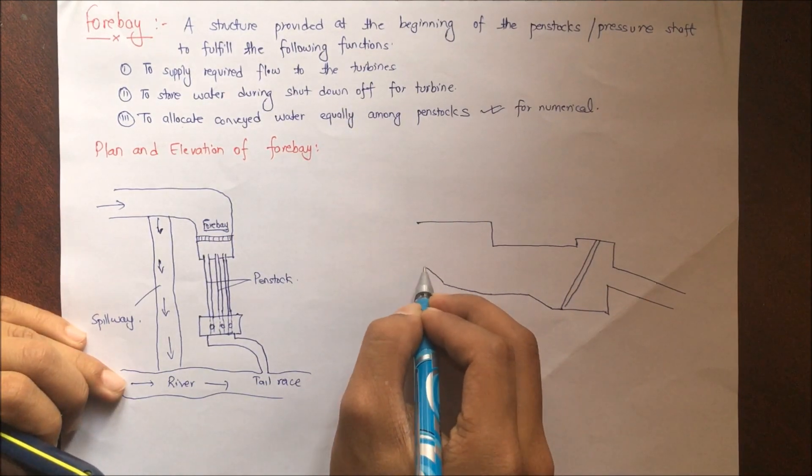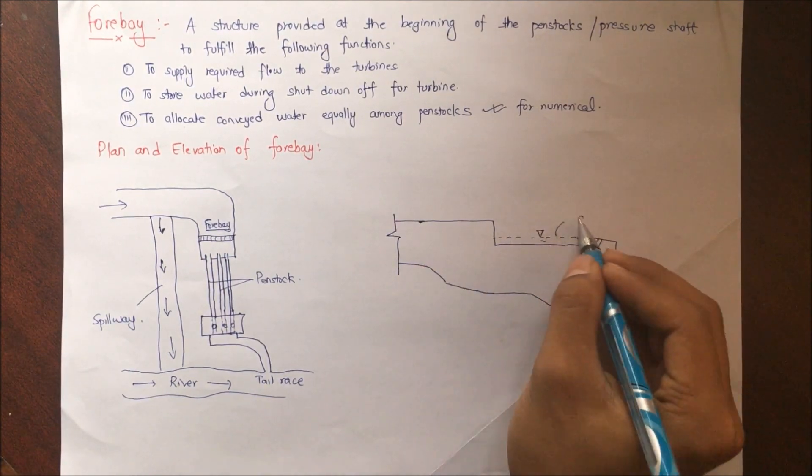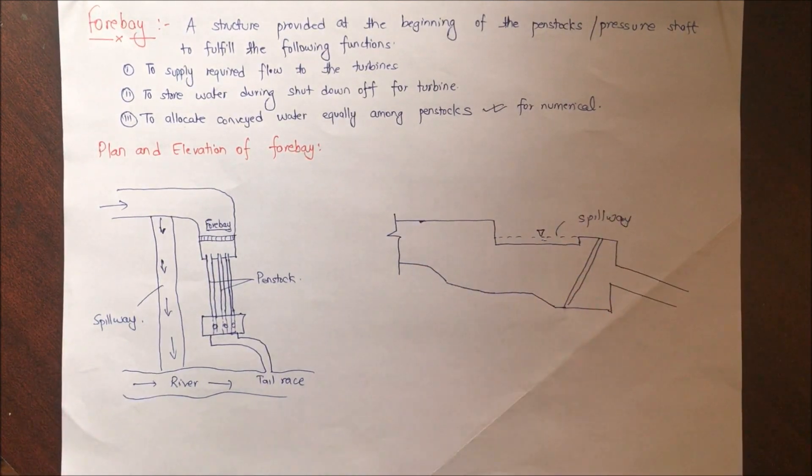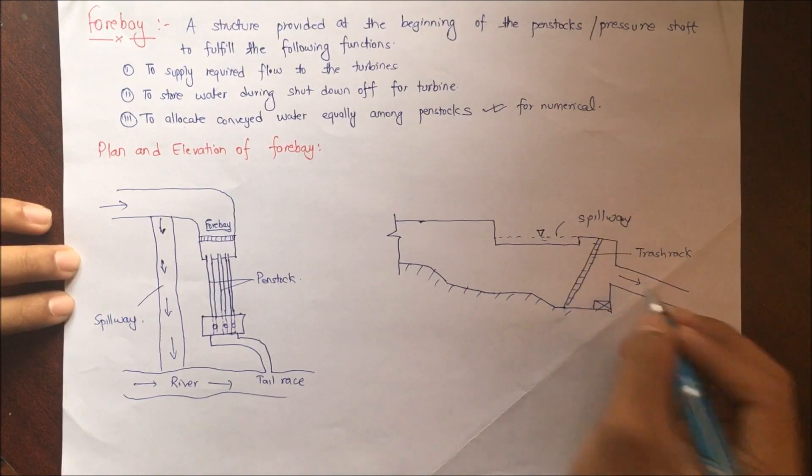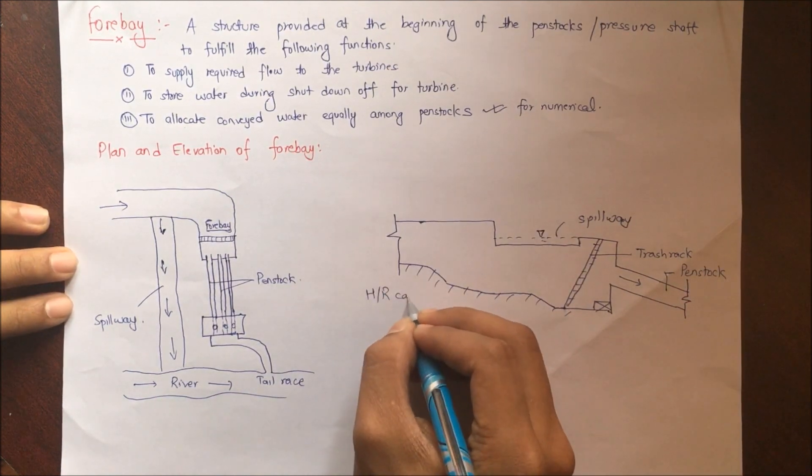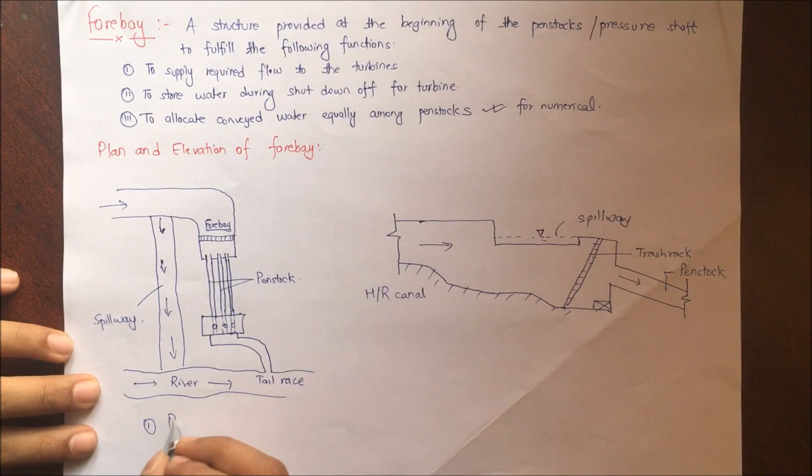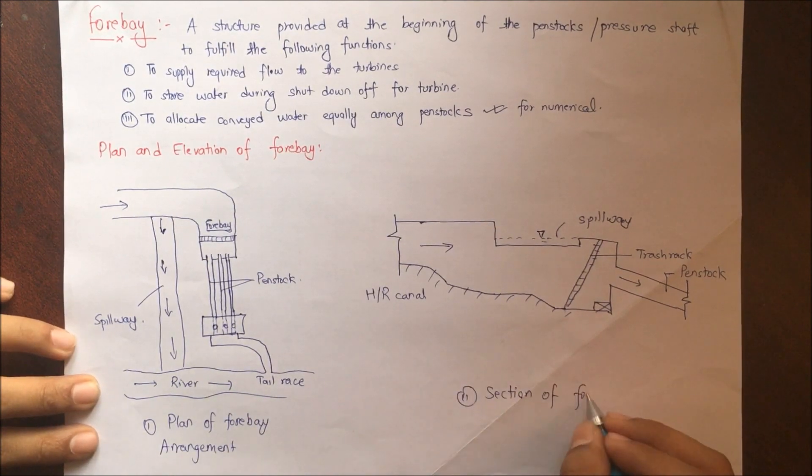This is the forbay and these are the penstocks. Now let us draw this section of the forbay. This is the spillway provided, that is the penstock, and a trash rack is provided at an angle of 45 degrees and this is the sloping surface provided. Plan of forbay and section of forbay.